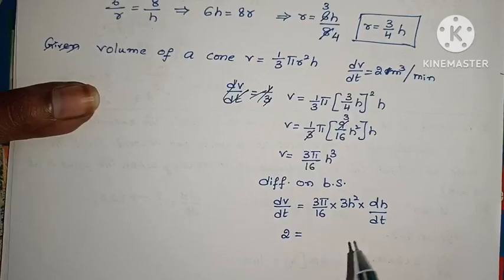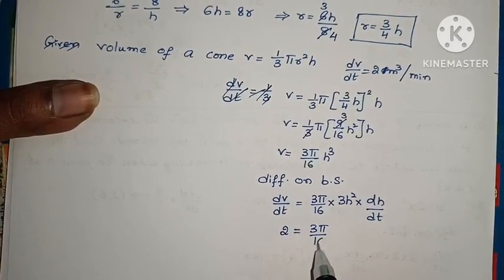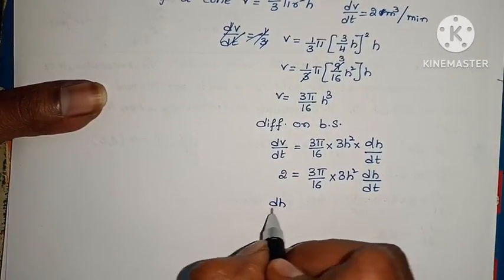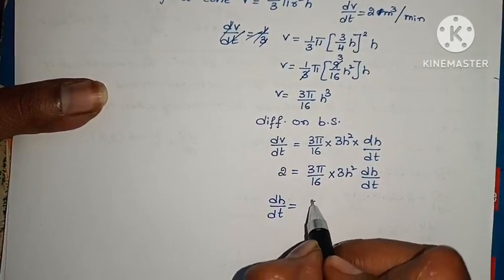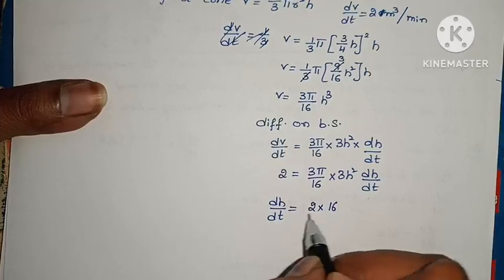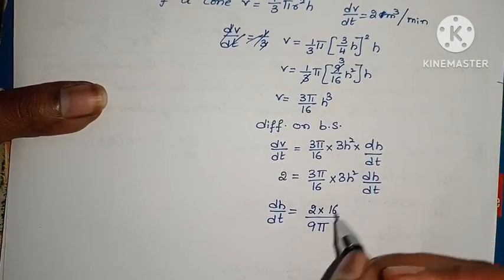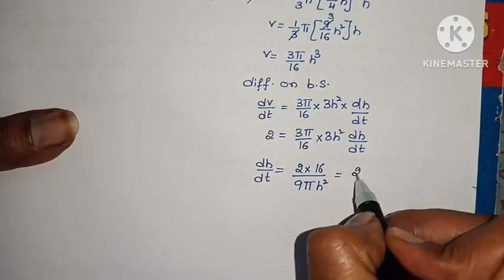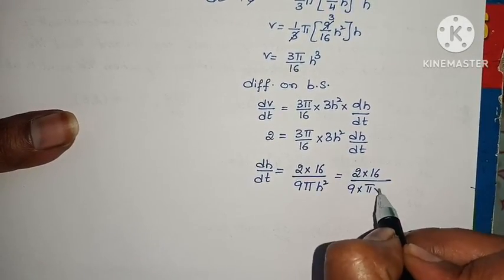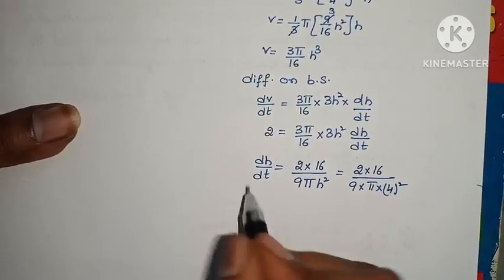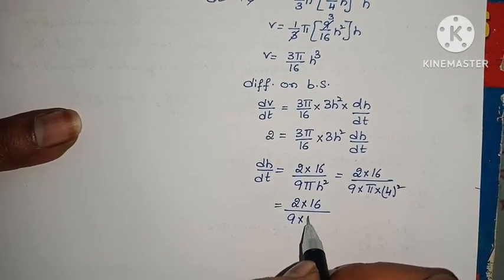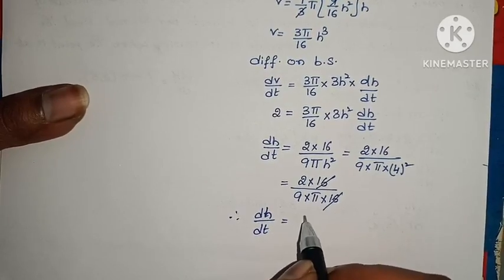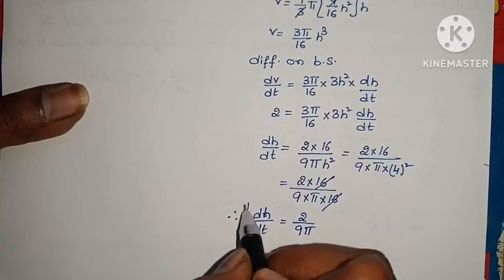dV/dt equals 3π/16 into 3H² dH/dt. We have 2 equals 3π/16 into 3H² dH/dt. Multiply and rearrange: 2 times 16 divided by 9π H². Already H is 4m from the question. Substitute: 2 into 16 by 9 into π into 4² which is 16. The 16s cancel. Therefore dH/dt equals 2/9π.